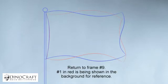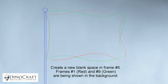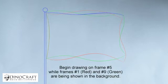Return to frame number 9. Number 1 is in red color being shown in the background for reference. Create a new blank space in frame number 5. Frames number 1, red, and number 9, green, are being shown in the background. Begin drawing on frame number 5 while frames number 1 and number 9 are being shown in the background.